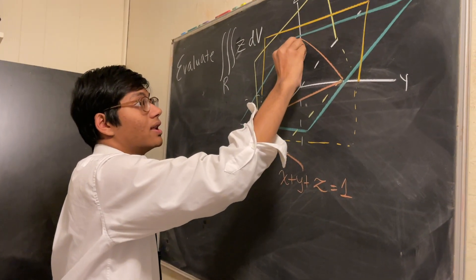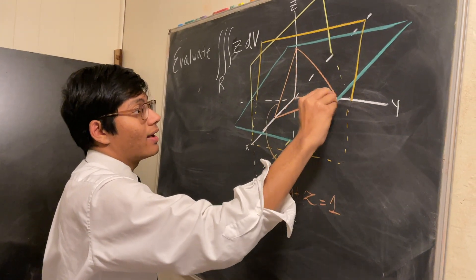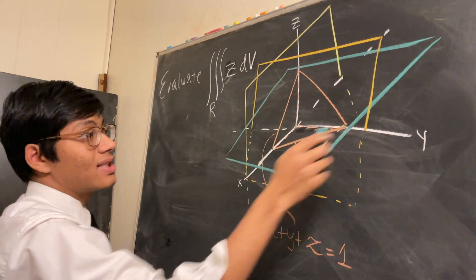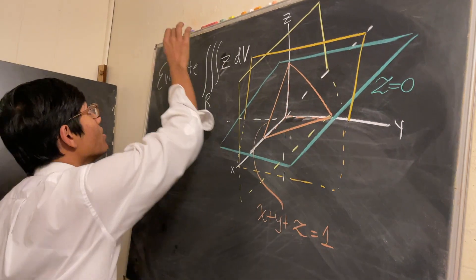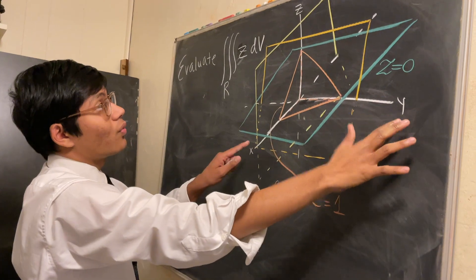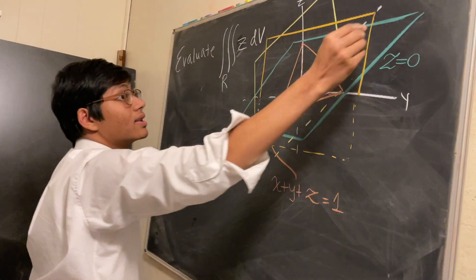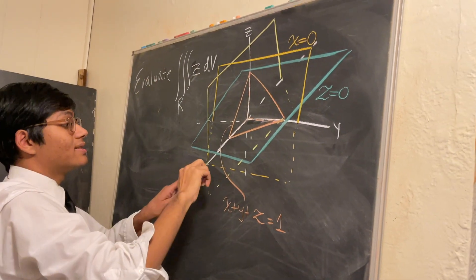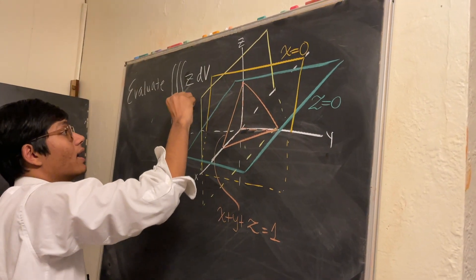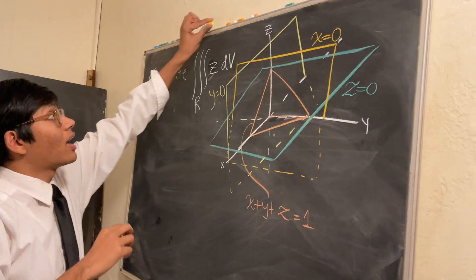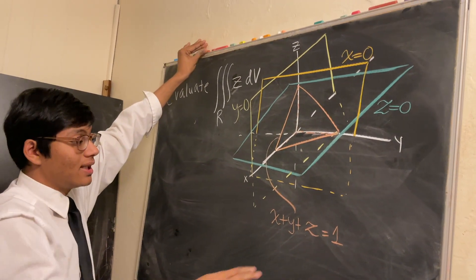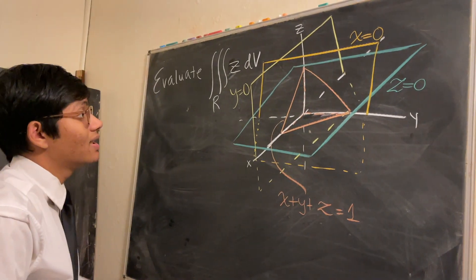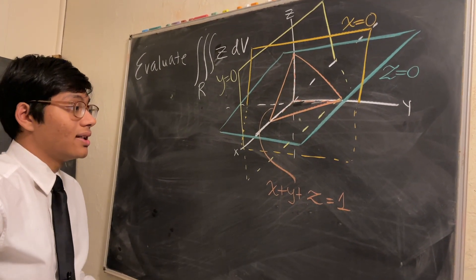So it forms this tetrahedron in the first octant. Our volume of integration is bounded by the green plane Z equals zero, the orange plane X equals zero on the YZ plane, the plane Y equals zero on the XZ plane, and the plane X plus Y plus Z equals one. So our region, our volume of integration, is bounded by four planes: X plus Y plus Z equals one, Y equals zero, X equals zero, and Z equals zero.